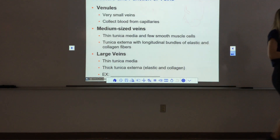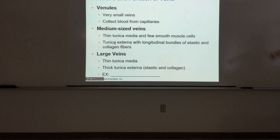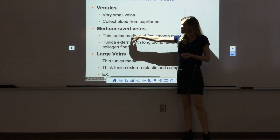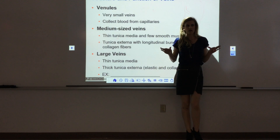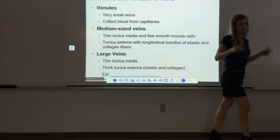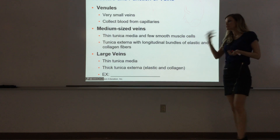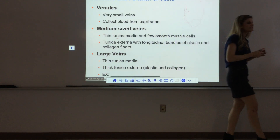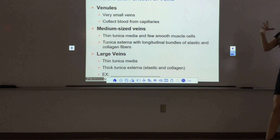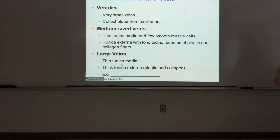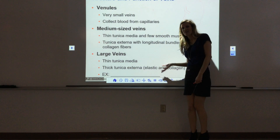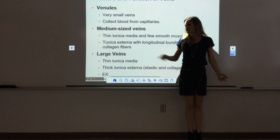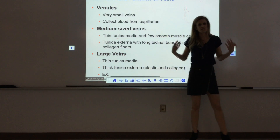Medium-sized veins have a relatively thin tunica media and a thicker tunica externa — they're not nearly as muscular as arteries. The tunica externa contains collagen fibers for strength and elastic fibers for elasticity. Large veins are structured just like medium-sized veins — thin tunica media, collagen for strength, elastin for elasticity. They're simply larger in diameter. That's it.